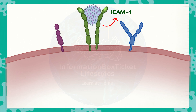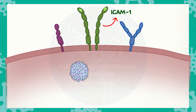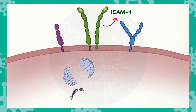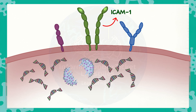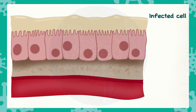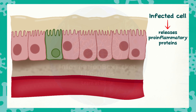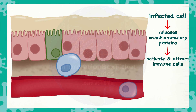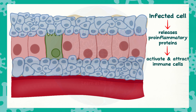This connection permits rhinovirus to be engulfed, or endocytosed, by the host cell. The icosahedral capsid breaks open during endocytosis, allowing rhinovirus's single-stranded RNA to enter the host cell's cytoplasm. Ribosomes in the host cell's cytoplasm take over viral protein synthesis, allowing the virus to proliferate. When a host cell becomes aware that it has been infected, it releases pro-inflammatory proteins such as cytokines and chemokines, which activate and attract immune cells to the site of infection, as well as recruit additional immune cells from blood vessels in the lamina propria — the layer just beneath the epithelium in the respiratory mucosa.